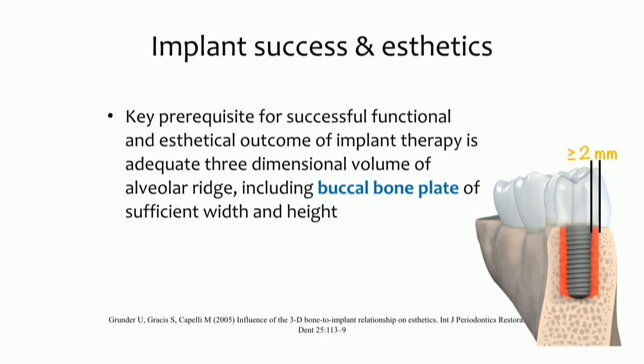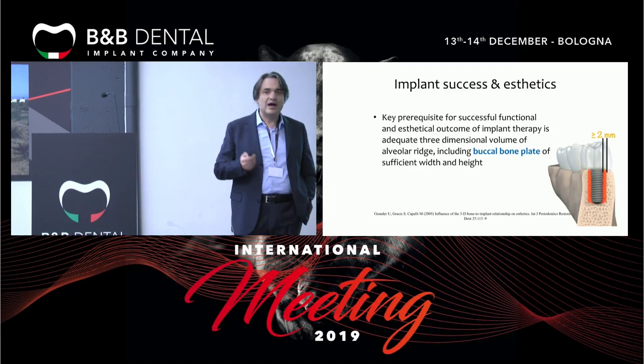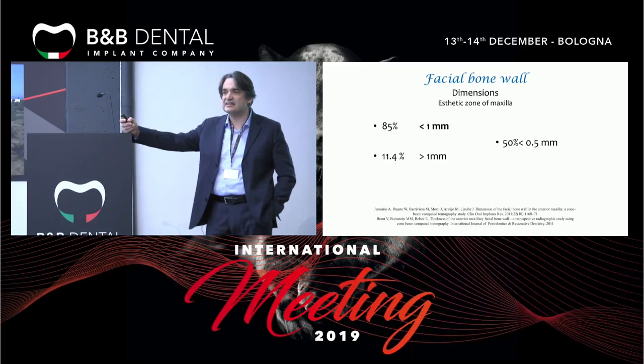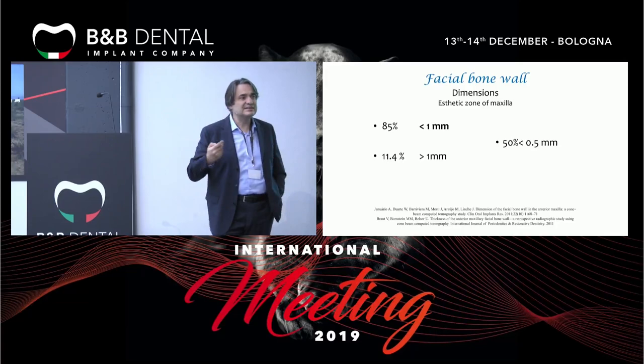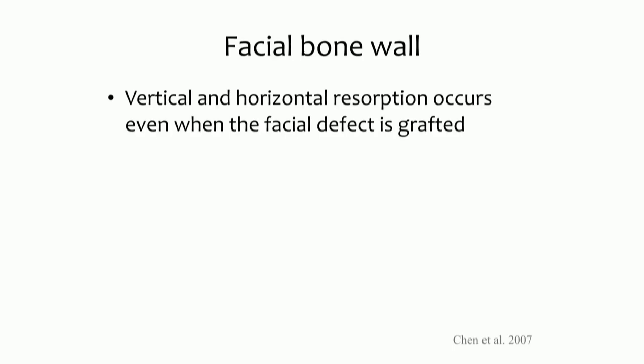For long-term implant stability, we need at least 1 mm of bone around the implant, except on the buccal side where we need at least 2 mm. Now the question is: how can the buccal bone wall — which in 85% of cases is thinner than 1 mm, in 50% thinner than 0.5 mm, and only in 11.4% thicker than 1 mm — provide us with 2 mm of new bone formation?